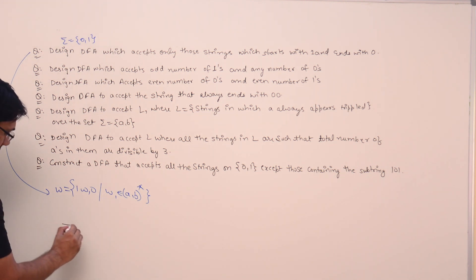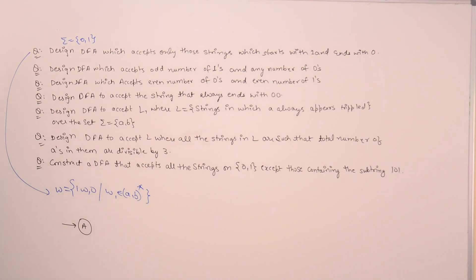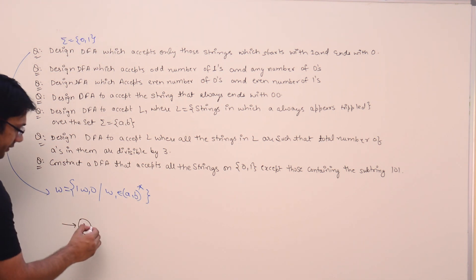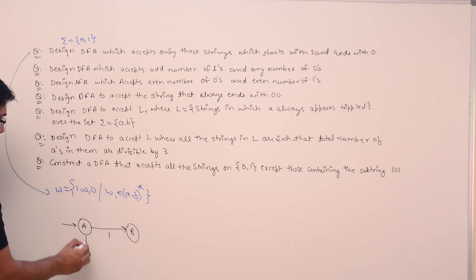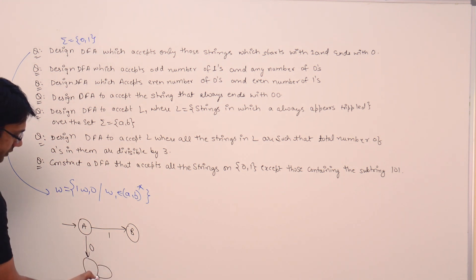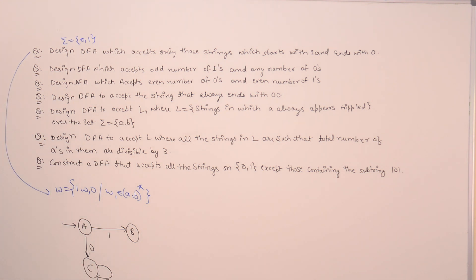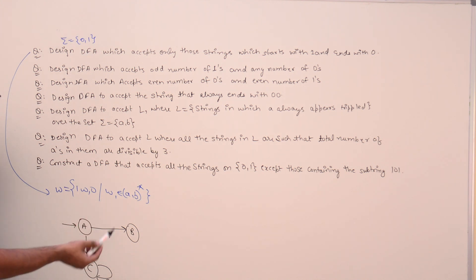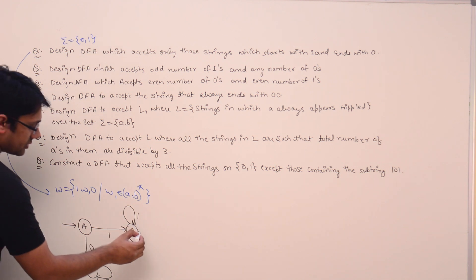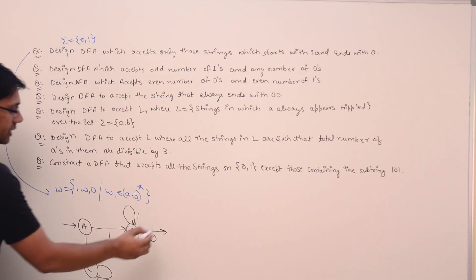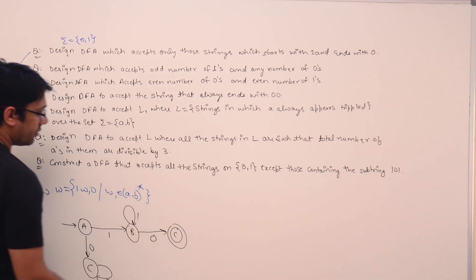Let us draw this DFA. We are going to have an initial state A. Every string should start with 1, so from state A on reading 1 we go to state B. But if a string starts with 0, it should not be accepted — we reject it completely. After getting the initial 1, we can have any number of 1s or 0s in any combination. As soon as we get a 0, we assume the string may be ending, and we go to state C, which we make the final state.